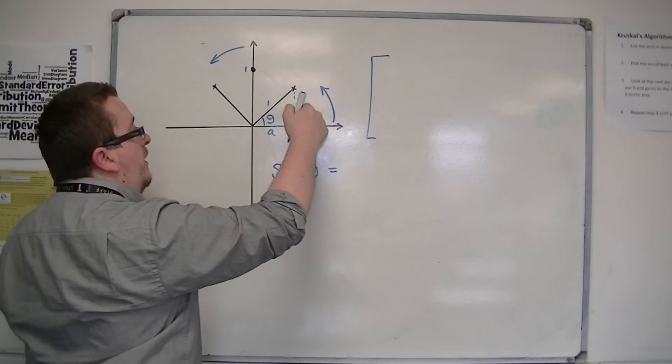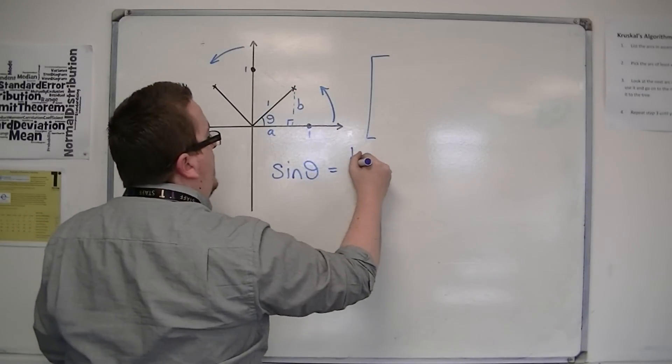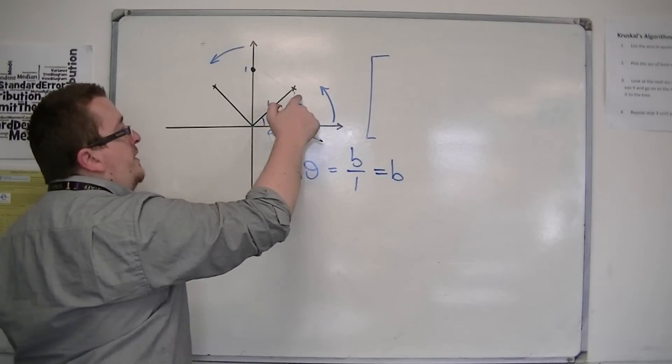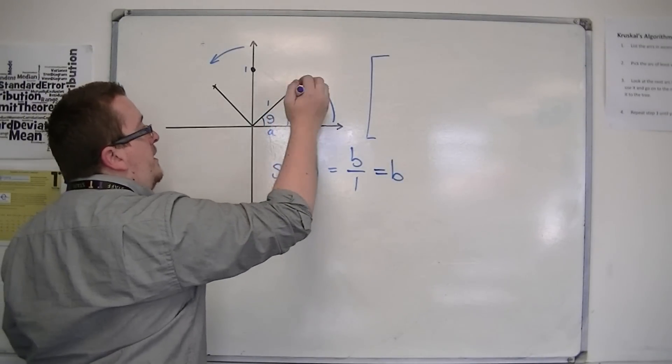is opposite over hypotenuse, so b over 1. And b over 1 is just b. So that means that the height of this triangle is just sine theta.